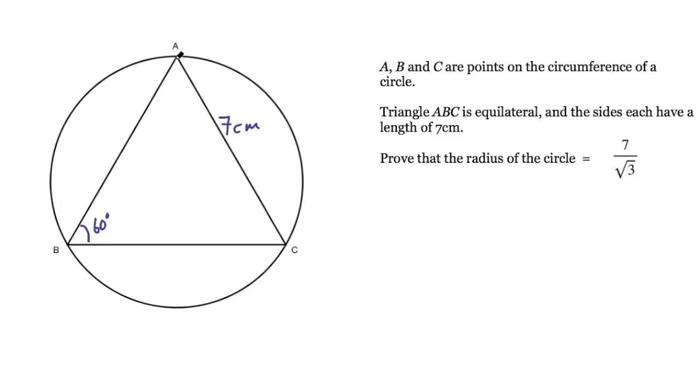Now if we draw a bisector of this triangle, a line cutting this triangle in half from point A to the bottom of this triangle, that's cutting this angle in half. So each of these angles is 30 degrees.